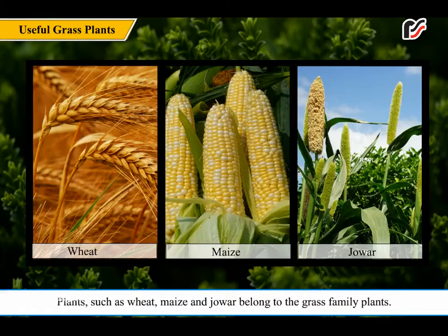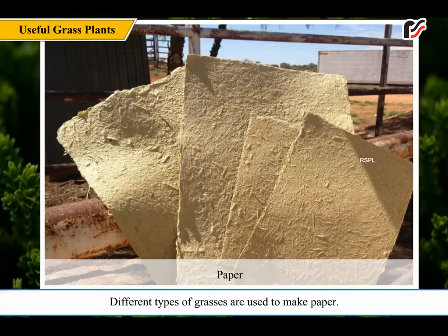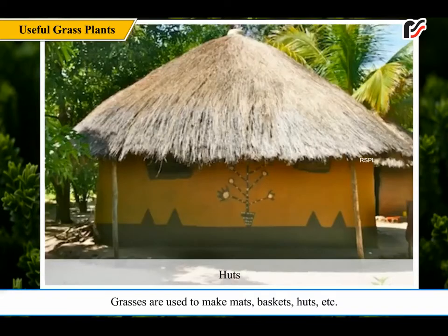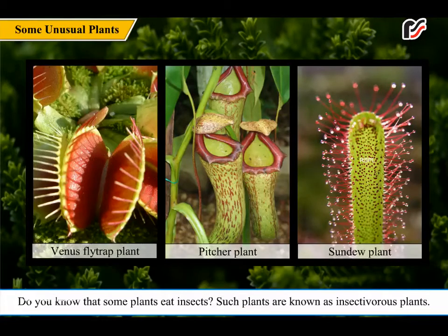Plants such as wheat, maize, and jowar belong to the grass family. They provide food for human beings and animals, and are very useful to us. Different types of grasses are used to make paper. Grasses are also used to make mats, baskets, and huts. Grasses also hold the soil and protect it from being washed away in the rain.